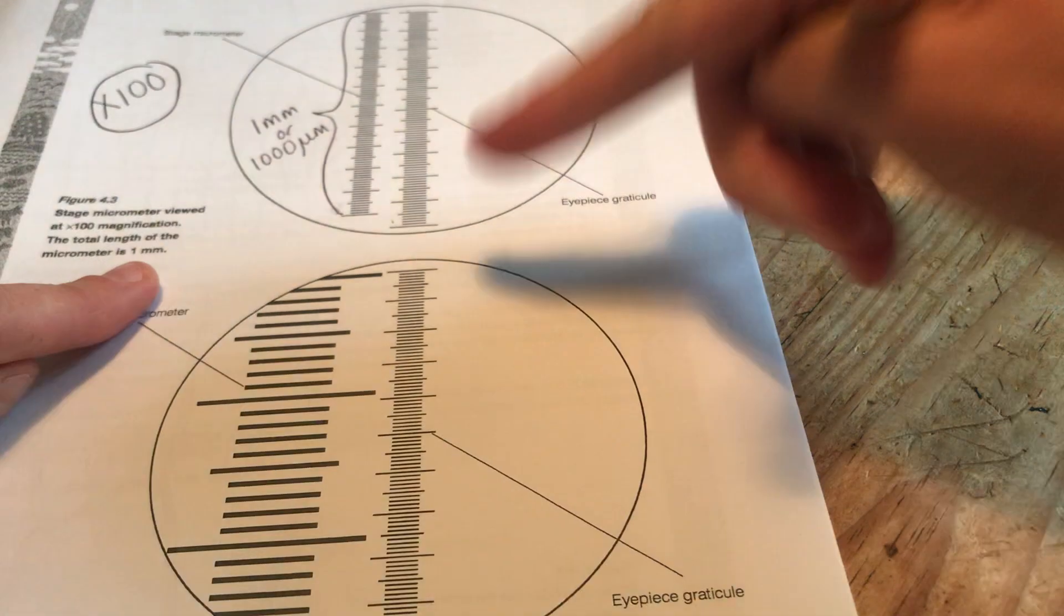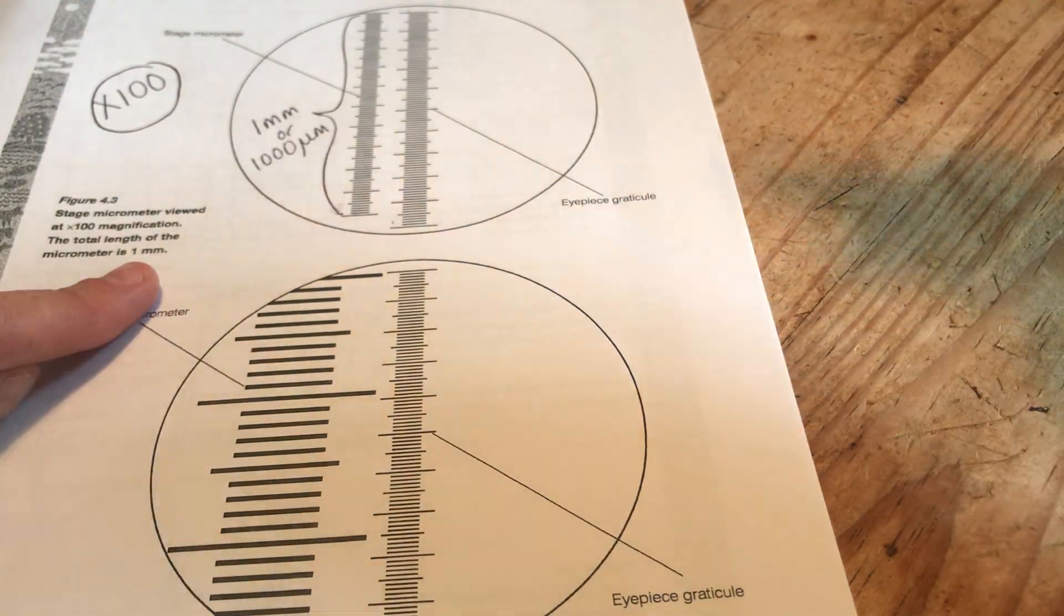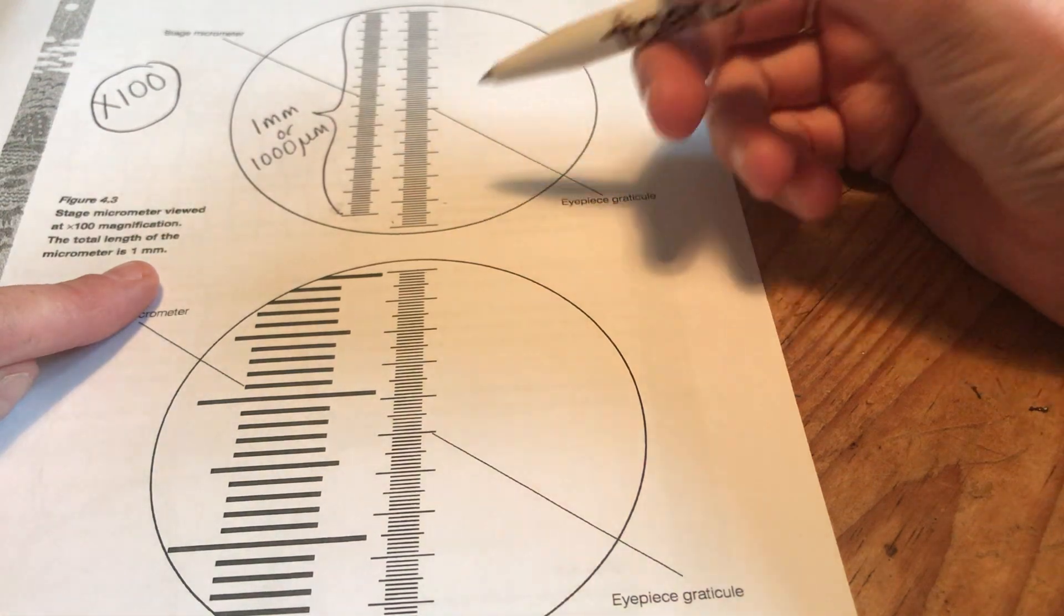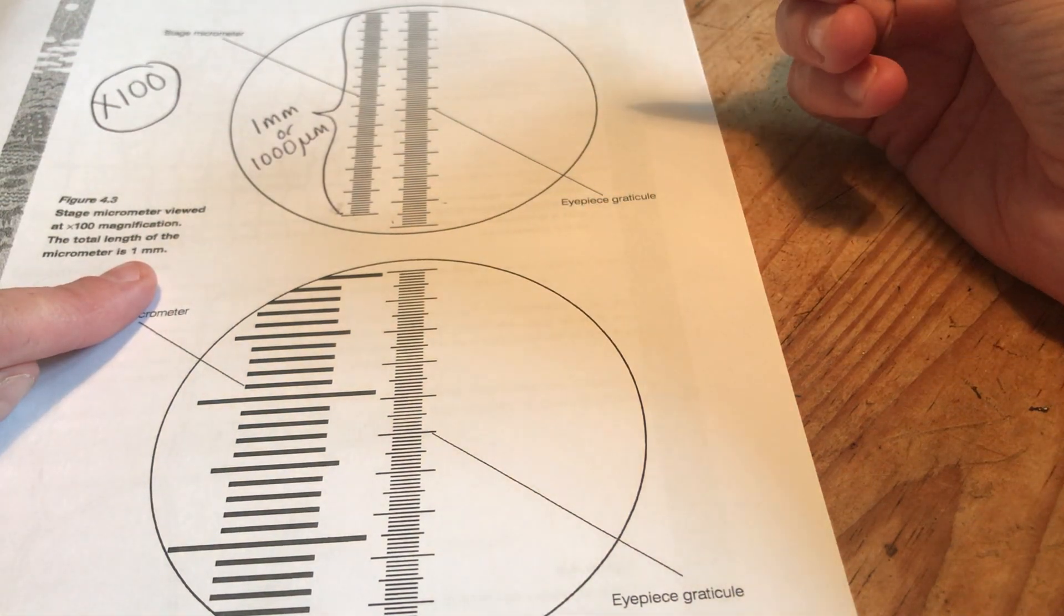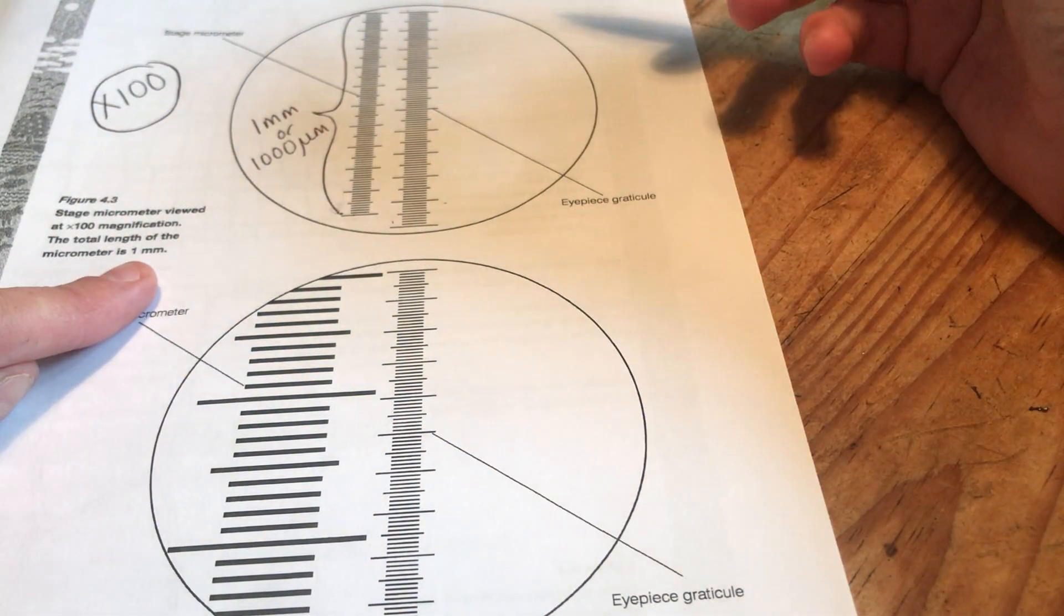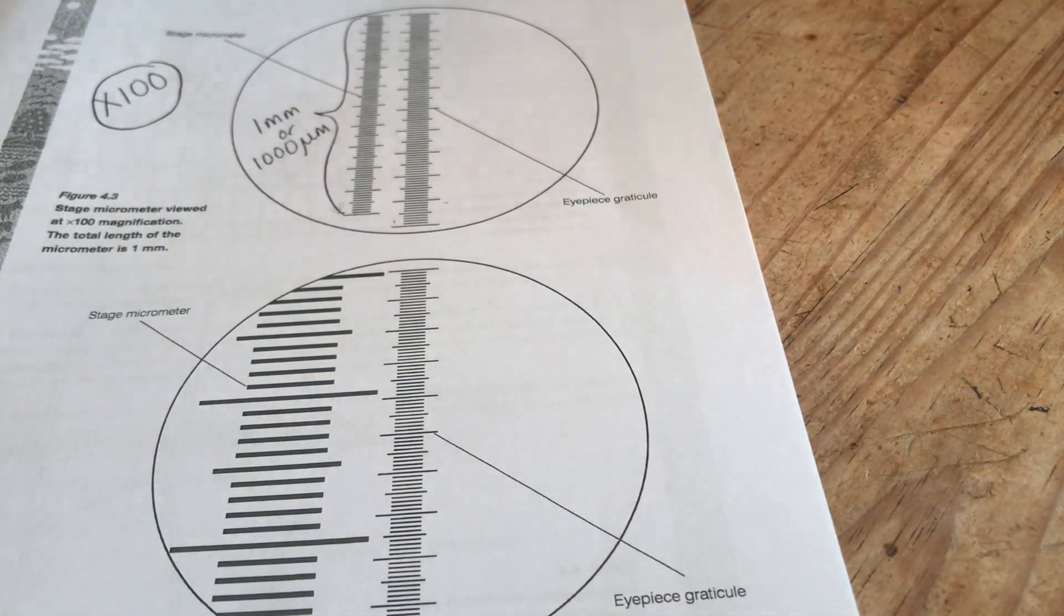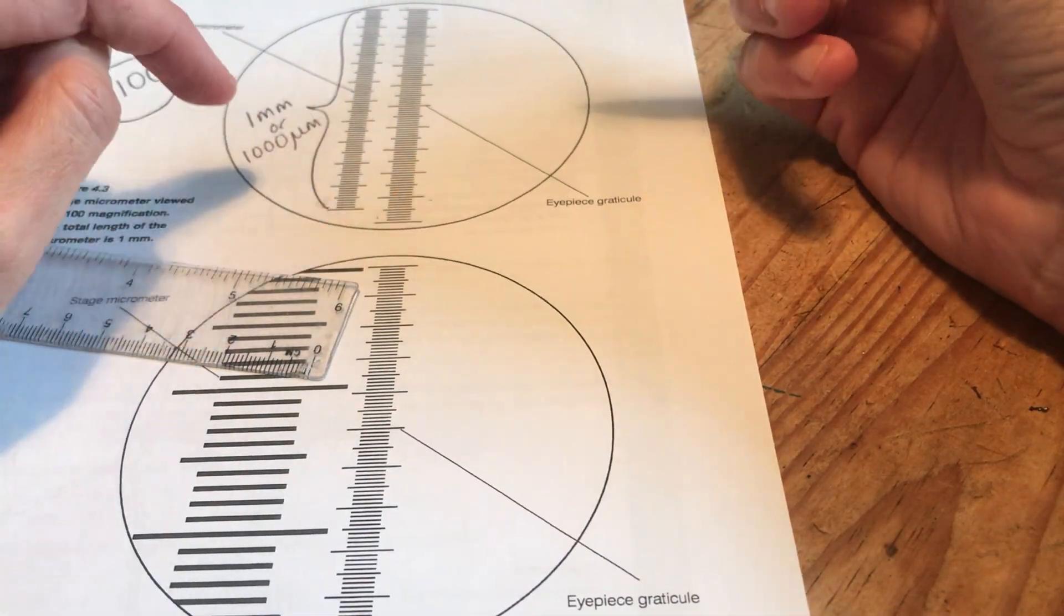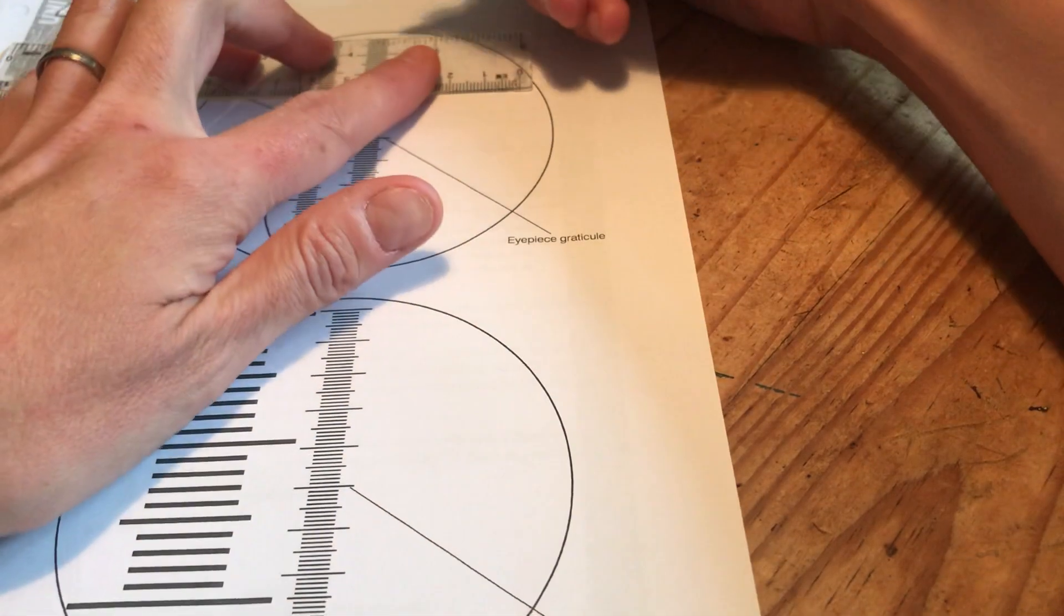Here's the eyepiece graticule. Remember an eyepiece graticule scale is not actual measurements it's literally just lines. You need to know how much each of those lines is worth in terms of a distance at different magnifications. So this is what you need to do. You need to take a ruler and you need to line up these two scales.